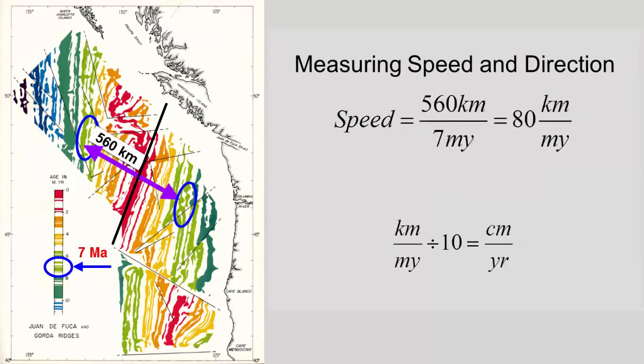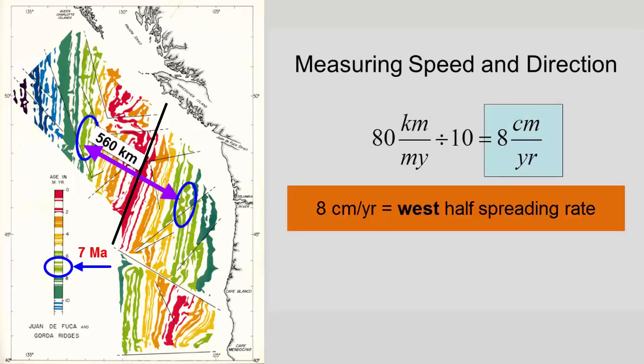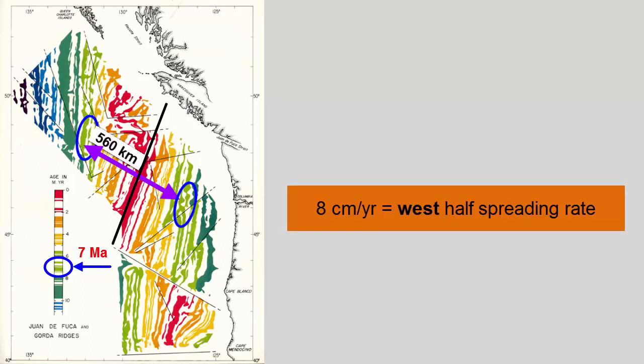That's 80 kilometers per million years, or 8 centimeters per year. We call that a half spreading rate, by the way, because it represents how fast one half of the rift is spreading, or how fast the western side is moving away from the center.